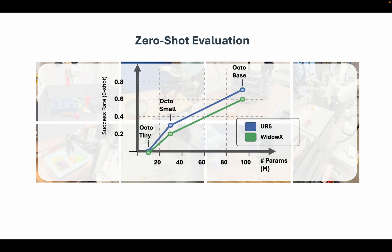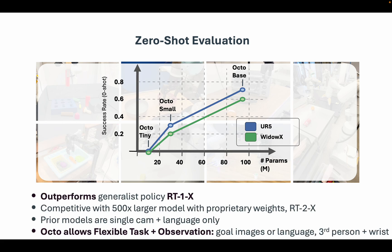Octo also has good model scaling, improving in performance as the number of parameters increases. But the important thing I want to mention is the flexibility. Prior models are rigid, allowing for only a single camera view and language specification only, while Octo allows for full flexibility: goal images, language, third-person views, wrist camera views, or any combination of the above.